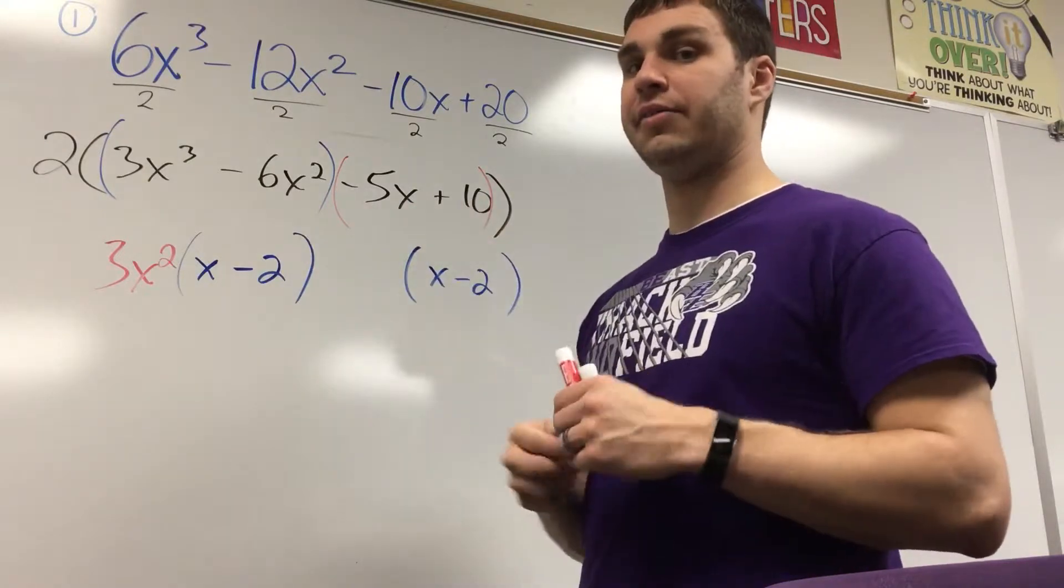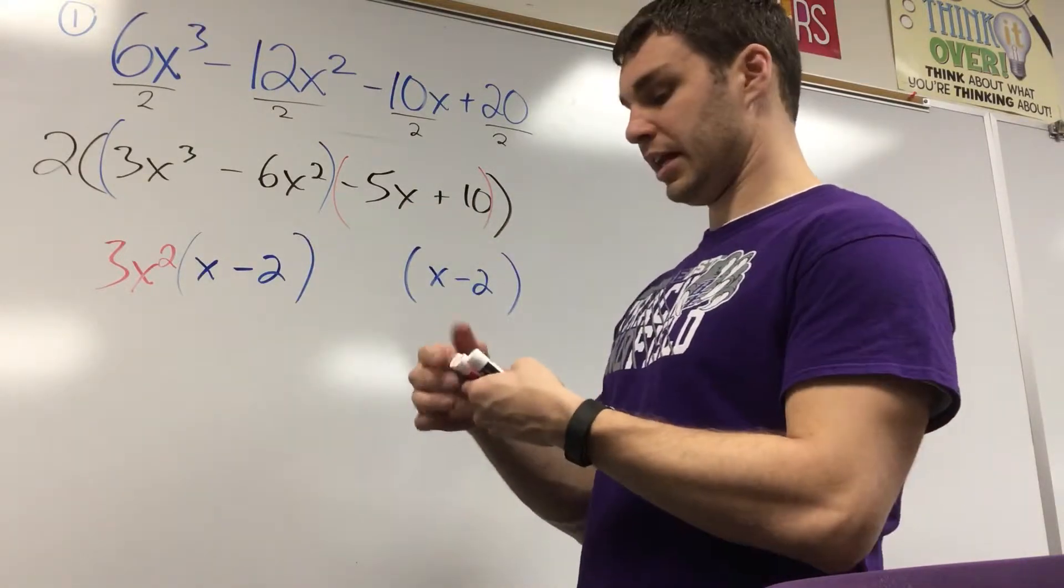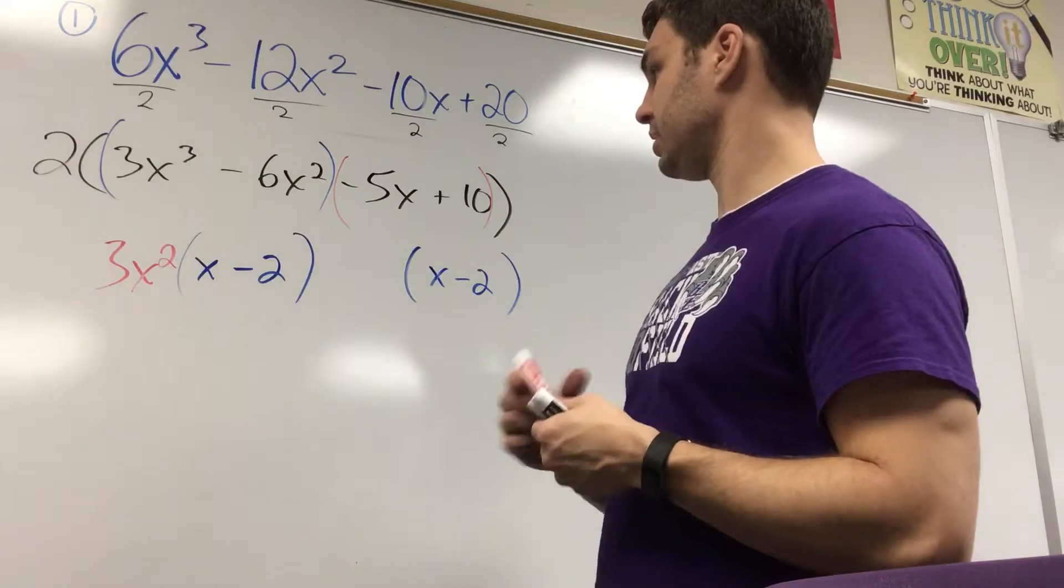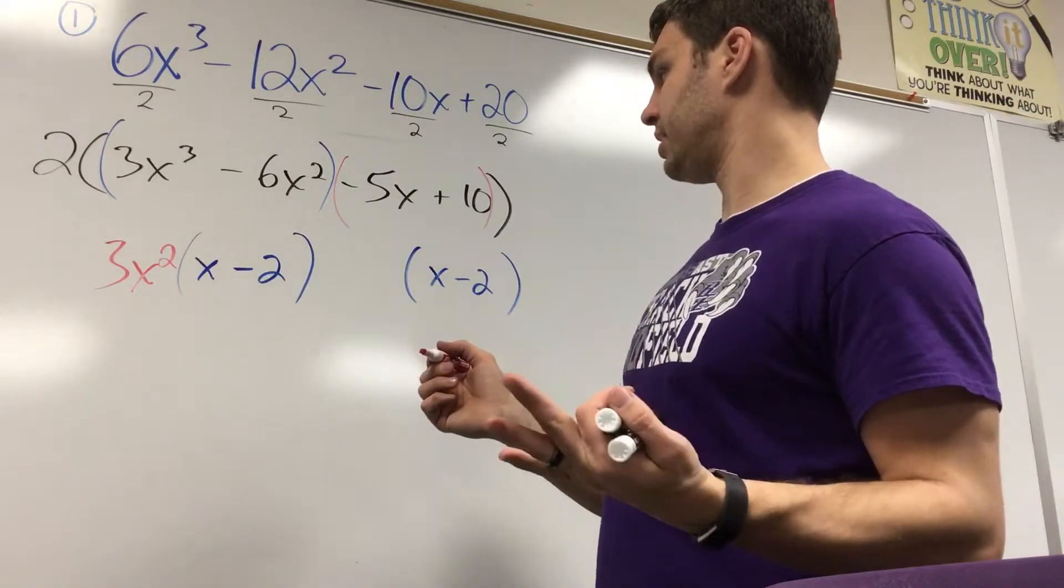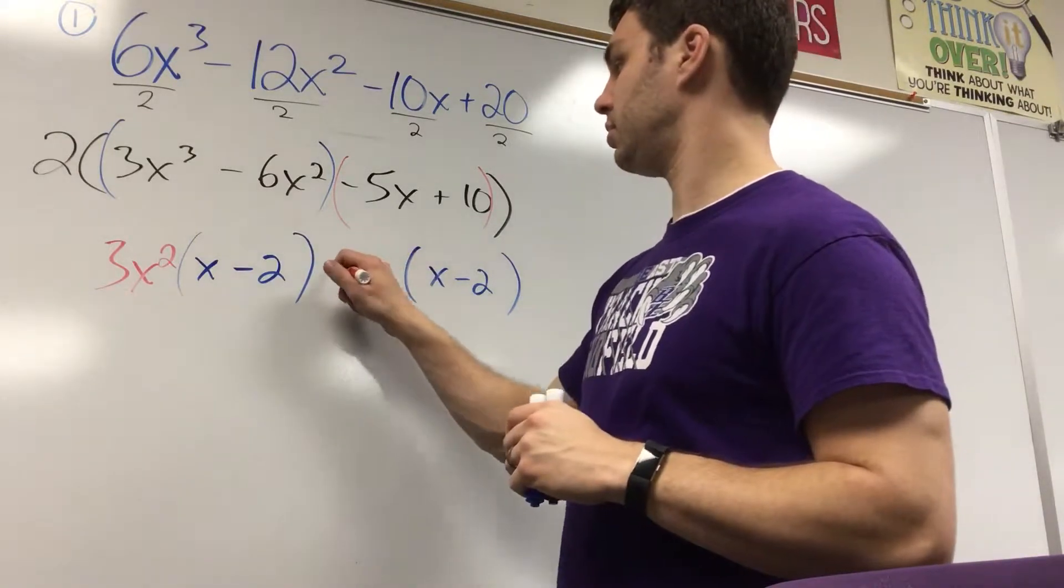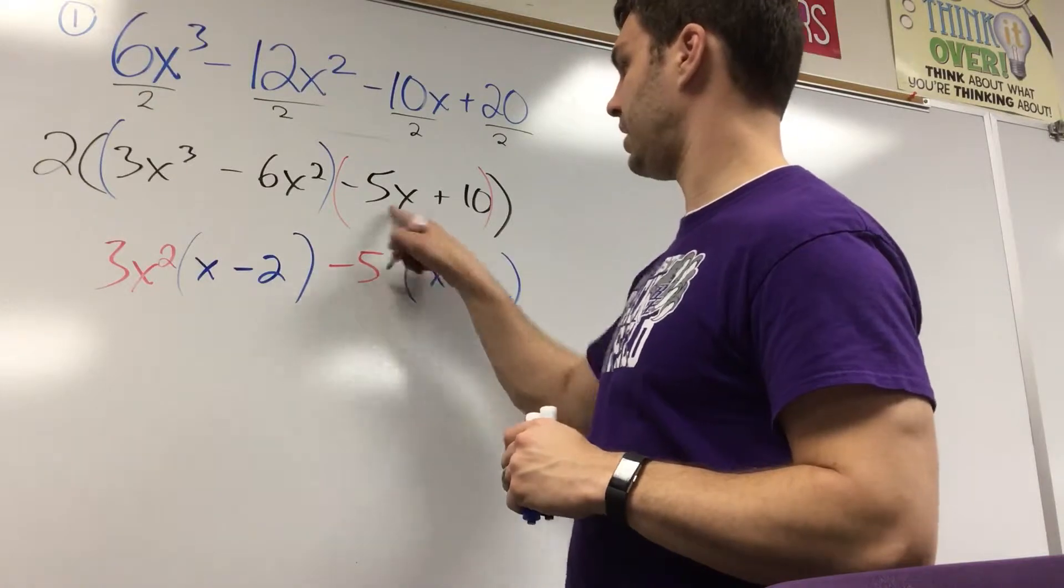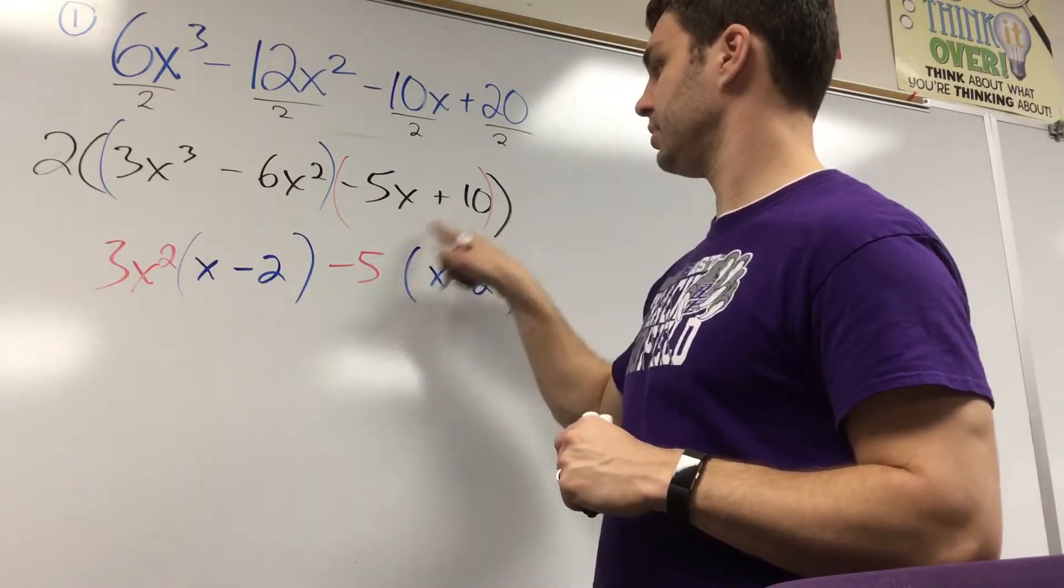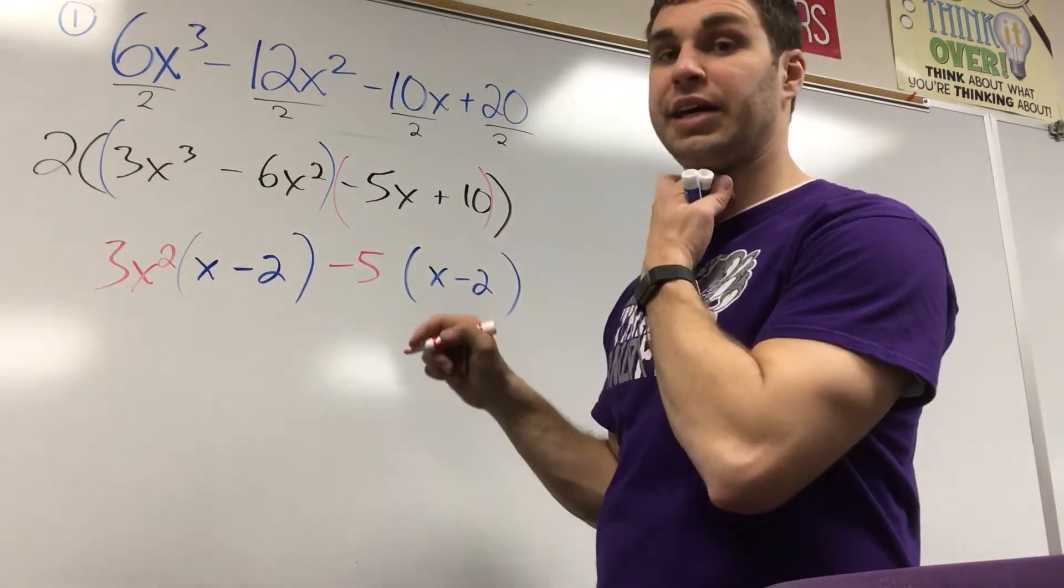And just looking at negative 5x plus 10, what can you take out so that it will leave you with x minus 2? I think I have to take out a negative 5. If I take out a negative 5, that's going to leave me with x. And negative 10 divided by negative 5 is negative 2.